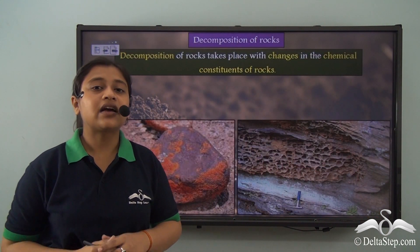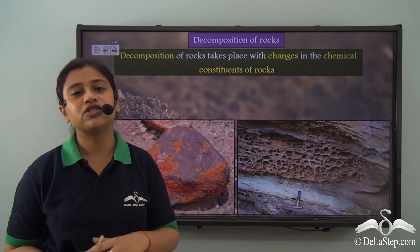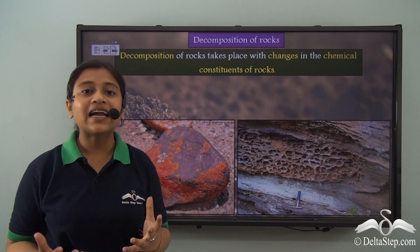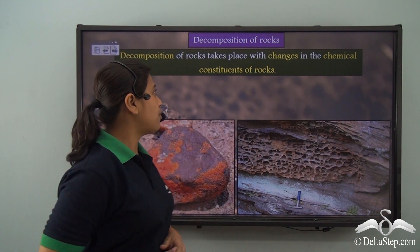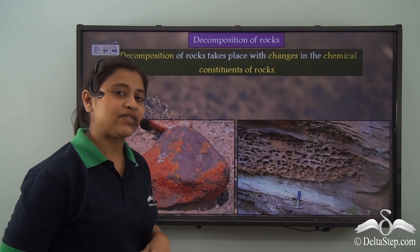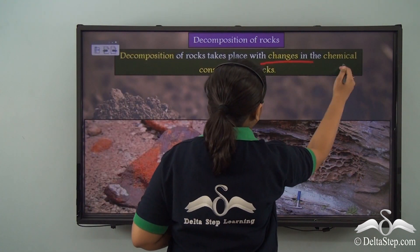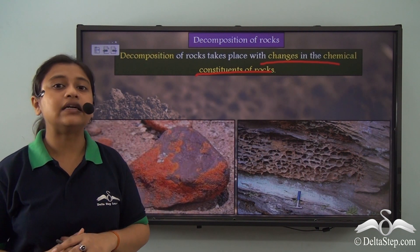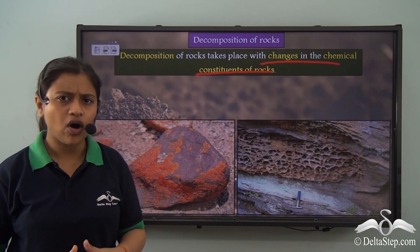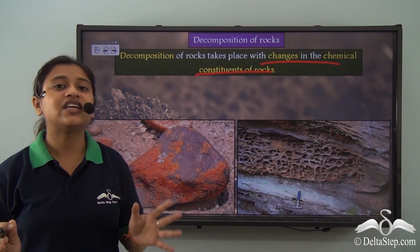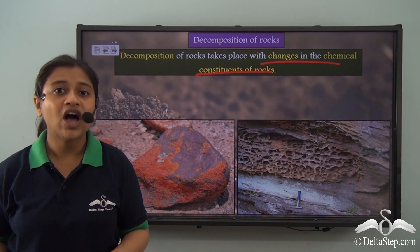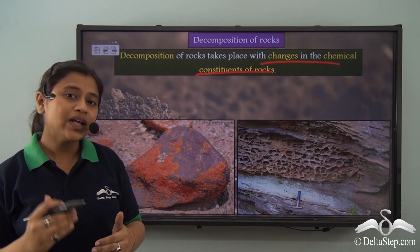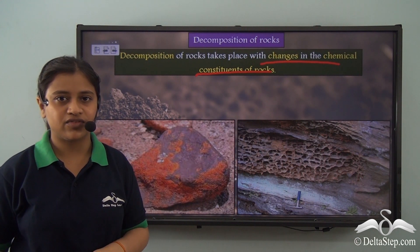Chemical weathering comes along with decomposition of the chemical constituents of rocks. Decomposition of rocks takes place with changes in the chemical constituents of rocks. If you remember from the last video, we learnt about disintegration of rocks that does not involve any change in chemical constituents. On the contrary, decomposition of rocks takes place with the change in chemical constituents of rocks.